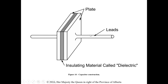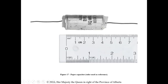A basic capacitor has two leads and two plates with a dielectric in between. We don't actually get current flow through them. It looks like current flow — especially in an AC circuit — because the capacitor is constantly charging and discharging as the polarity changes. Factors that affect capacitance are the area of the plates, the type of dielectric, and the distance between the plates.